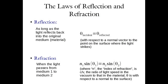We have here collected on one page the laws of reflection and refraction. Reflection: as long as the light reflects back into the original medium from which it started — if light comes in from air and strikes the interface with glass, part of it will bounce back and stay in air — we know that theta incident equals theta reflected, both with respect to the normal to the surface. The law of refraction is a little more complicated: N1 sine theta1 equals N2 sine theta2, where N1 is the index of refraction of the incident material and N2 is the index of refraction of the second material.